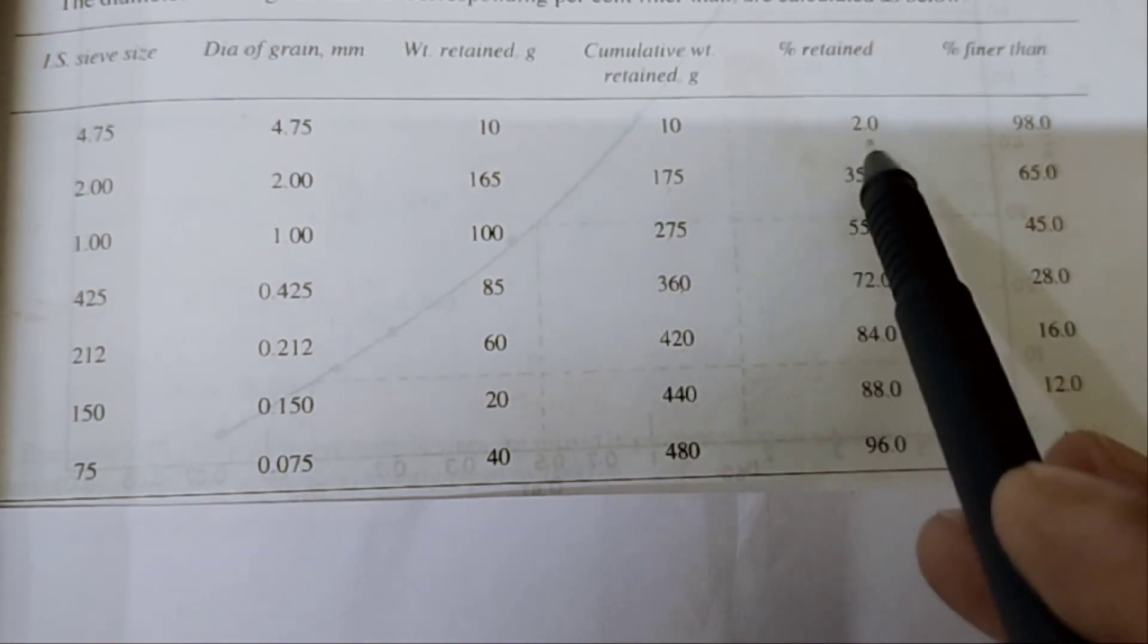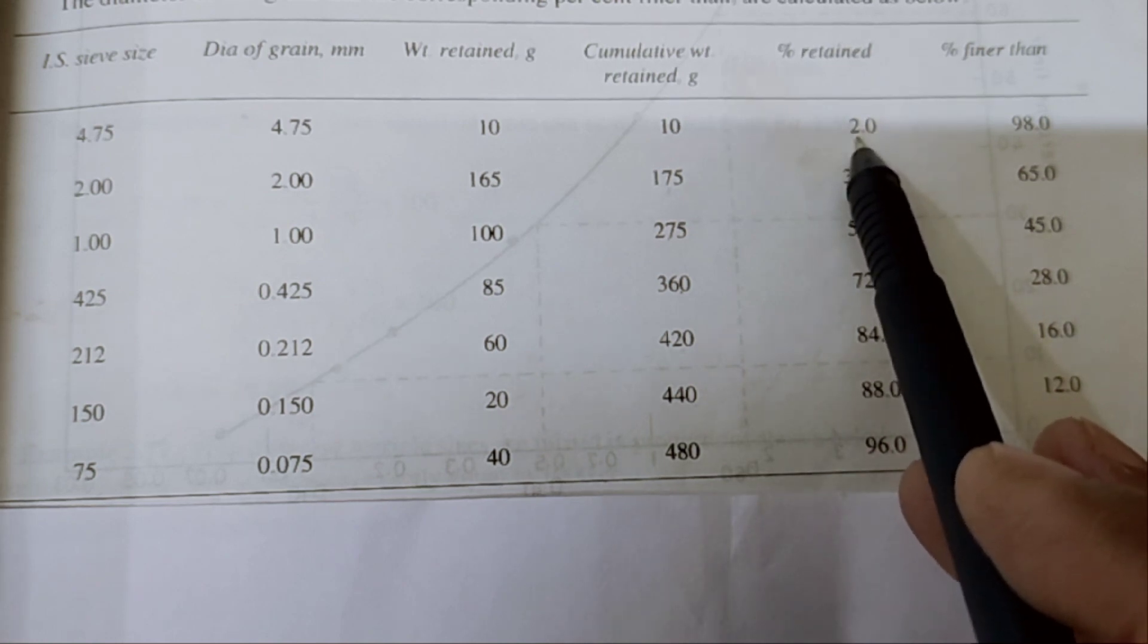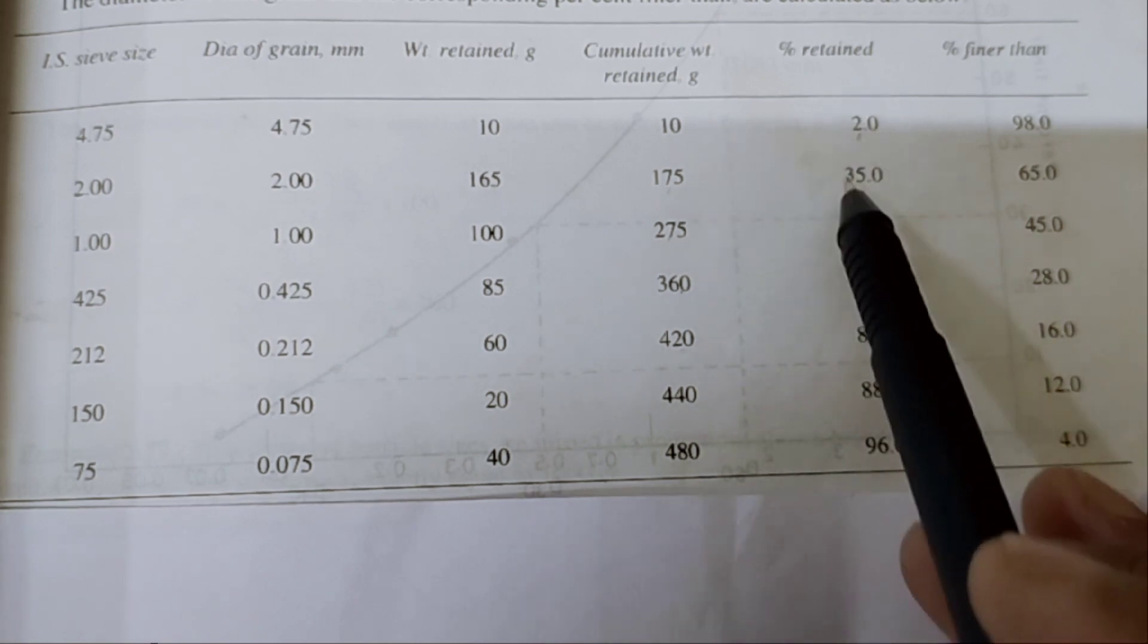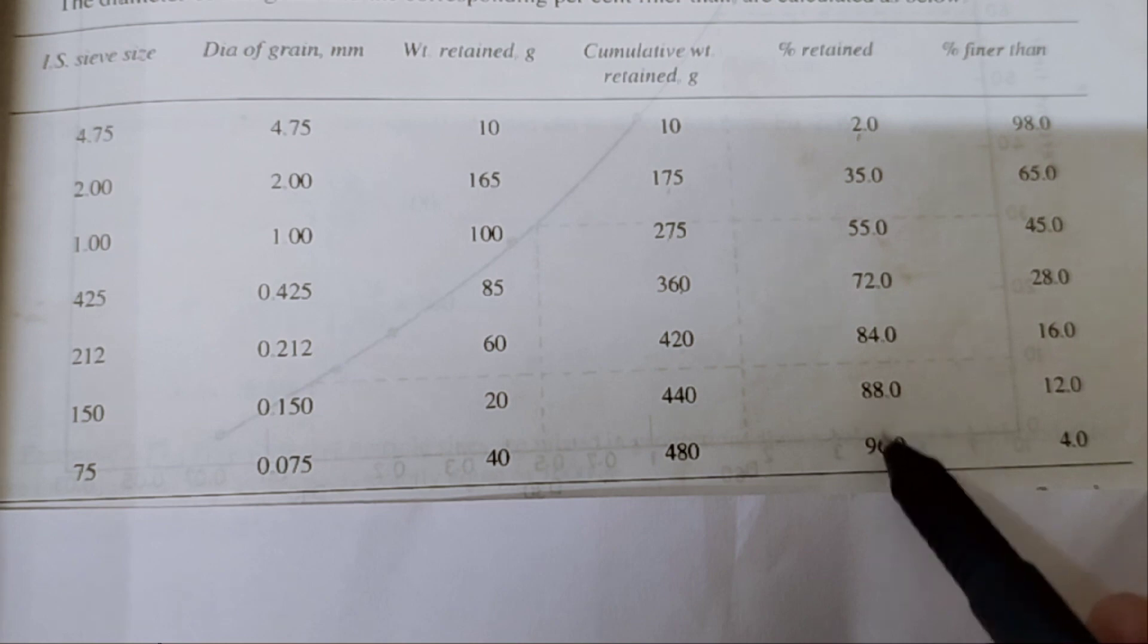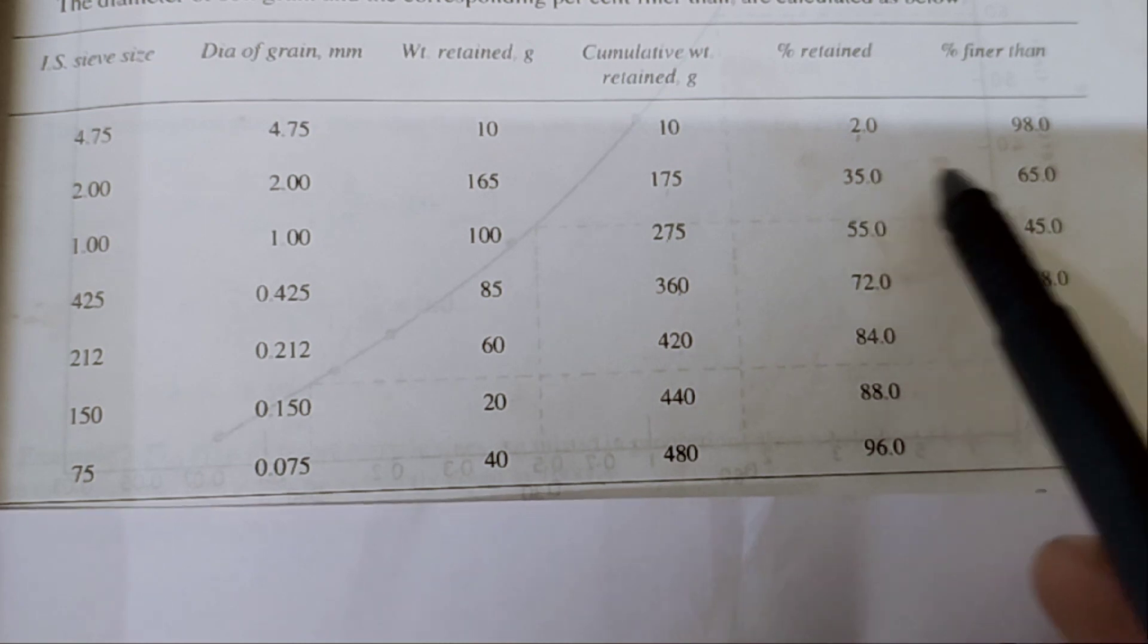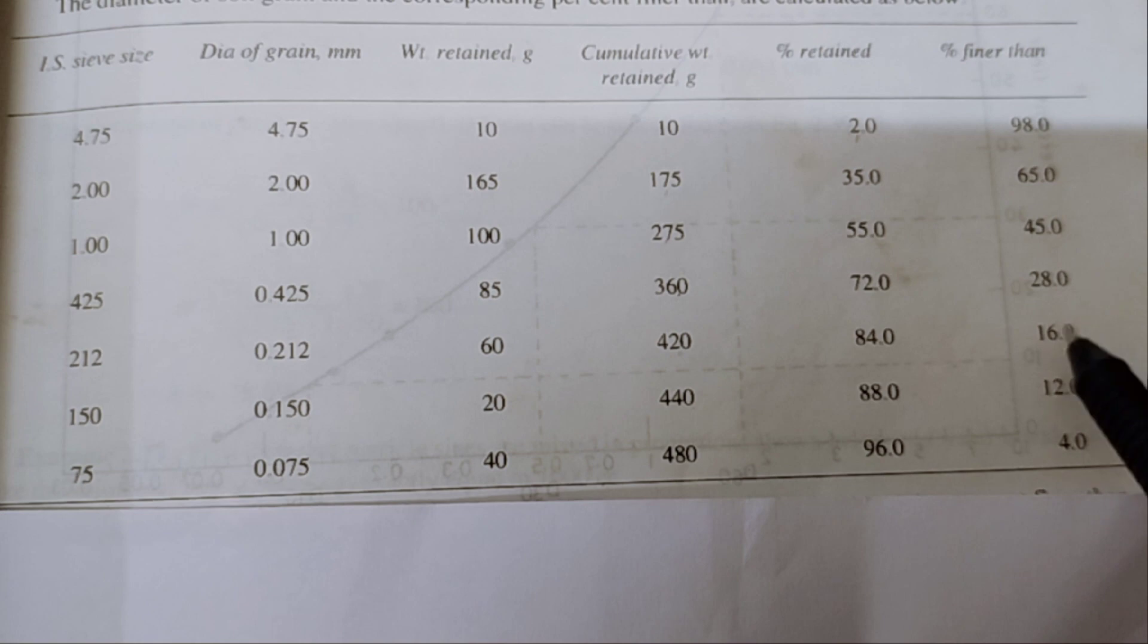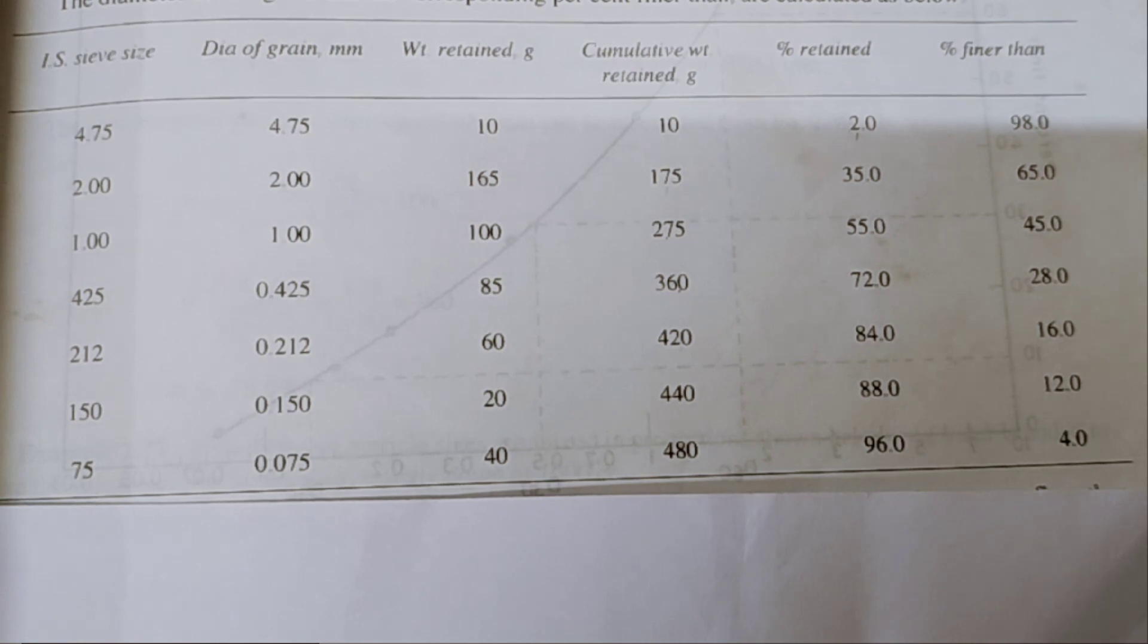So, percentage retained will be 10 divided by 500 gram into 100, it will become 2. Similarly, we can calculate the percentage retained and it is 35, 55, 72, 84, 88 and 96. Here, percent finer means 100 minus this percentage retained. So, 100 minus 2, that is 98 and 100 minus 35, that is 65. Like this, we calculated the percent finer.